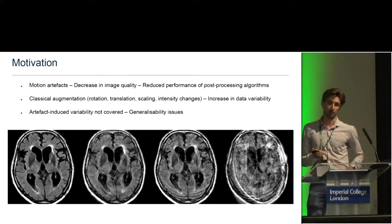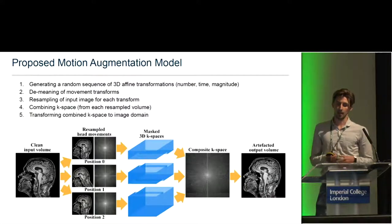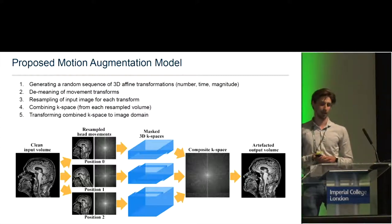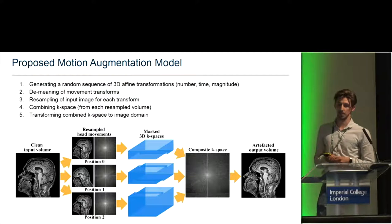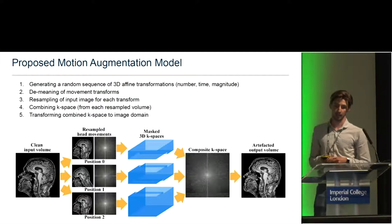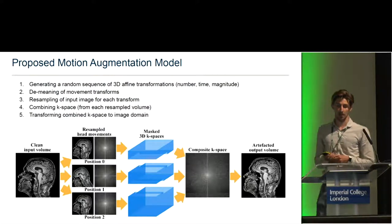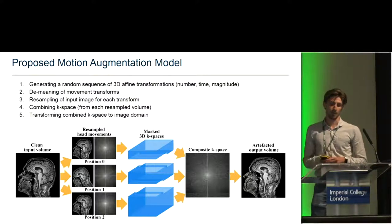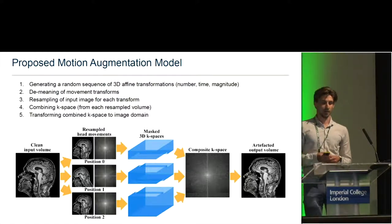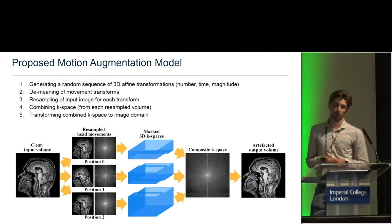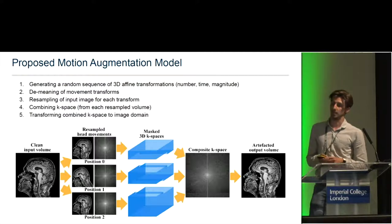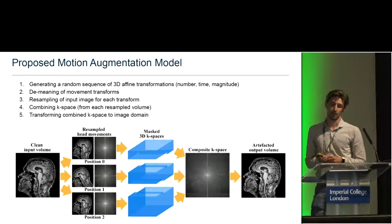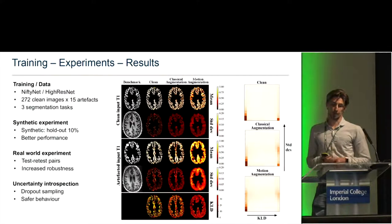We present a method to generate realistic motion artifact data for training neural networks. Our proposed artifact augmentation model first generates a random sequence of 3D affine transformations, sampling the number of transformations, the time at which they occur, and their magnitude. By demeaning the affine transformations, we resample the input image volume according to the movement model, combine the k-space bases from each resampled volume to form a composite k-space, and then by transforming back to the image domain, produce the final artifact image.